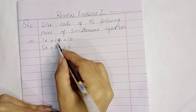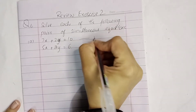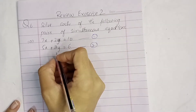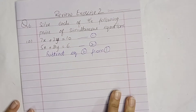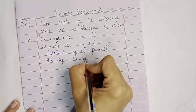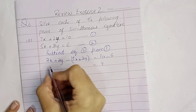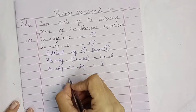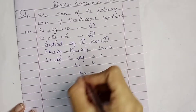Looking at part a, both equations have the same coefficients, which means elimination is easy for us. We will subtract one equation from the other. This is equation number one and this is equation number two. We subtract equation two from one. After subtracting, 10 minus 6 gives four, and sign change happens: minus five x minus two y.